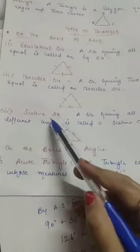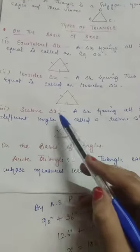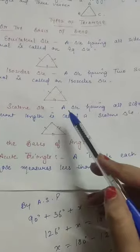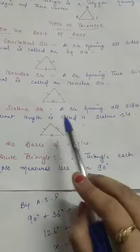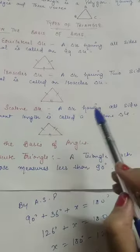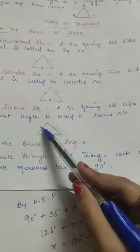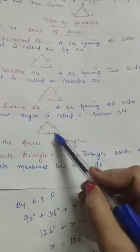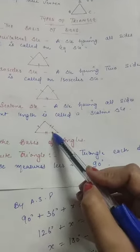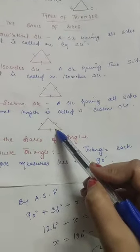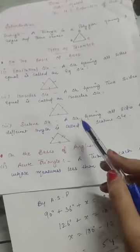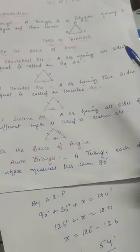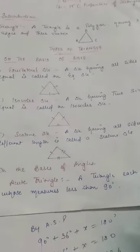What is a scalene triangle? A triangle having all sides different in length — that means the triangle's 3 sides are all different in length. These 3 triangles are your triangles on the basis of sides.